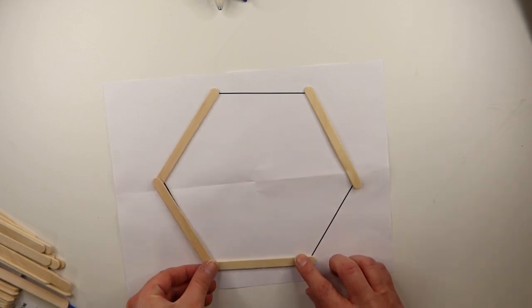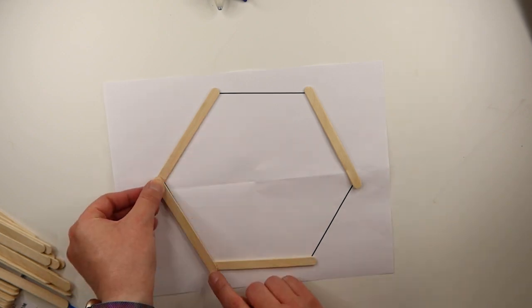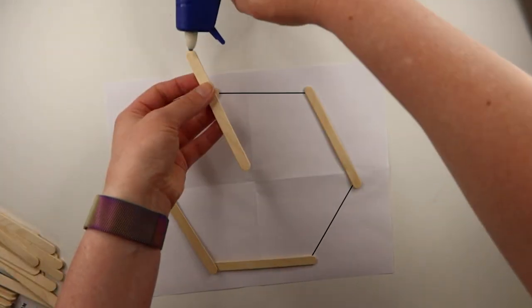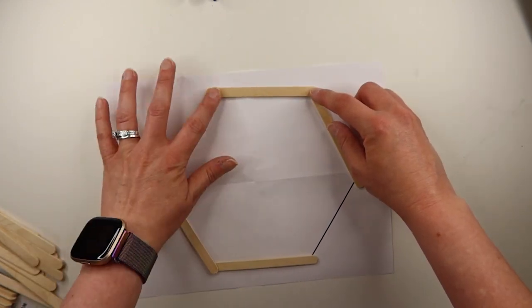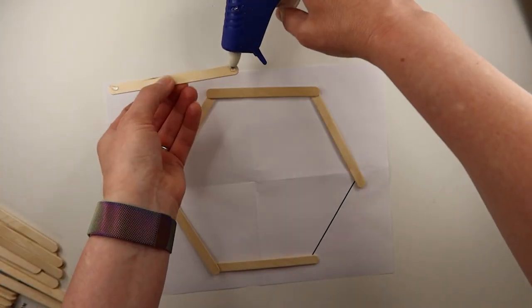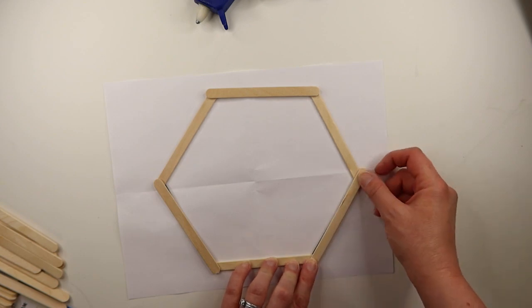You'll have a few seconds to slide around and make adjustments, but the glue does harden quickly. Do this with two more popsicle sticks in both remaining empty spaces. Make sure this is as accurate as possible. It will be the foundation for the rest of the popsicle sticks.